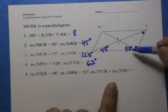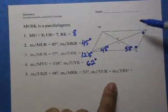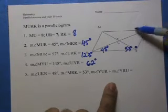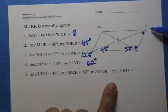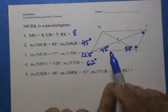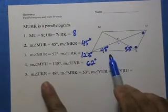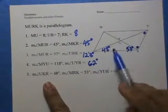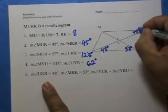Now, this is kind of a puzzle here. But the only angle we're missing from this side over here is this angle up here, angle MUY. Well, we were given this angle, angle UKR.